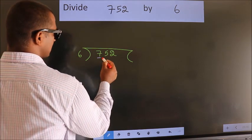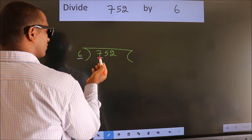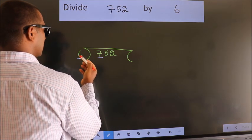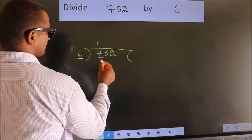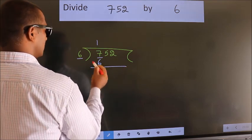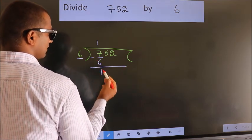Here we have 7. Here 6. A number close to 7 in 6 table is 6 ones, 6. Now we should subtract. We get 1.